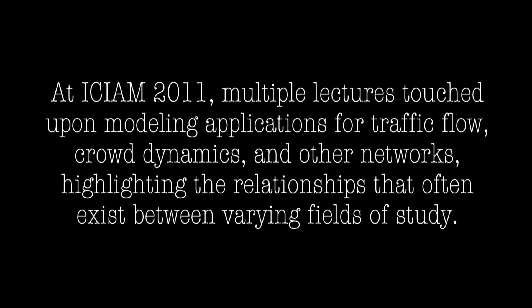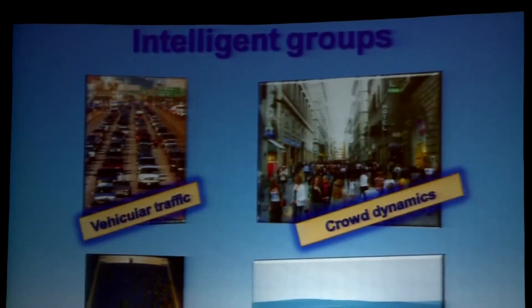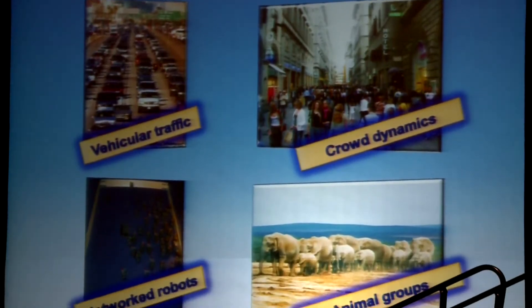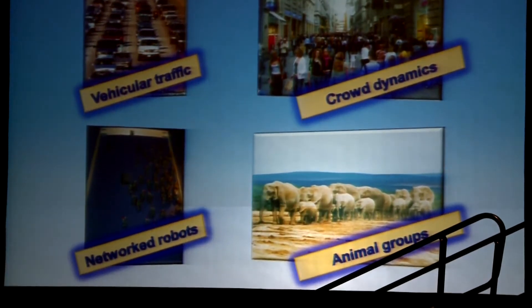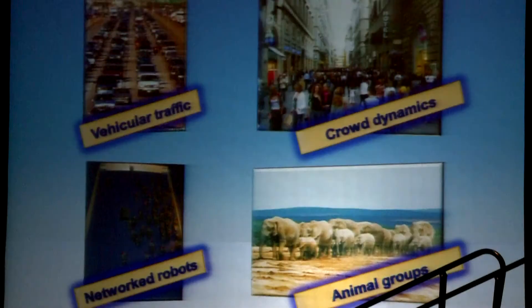I like to think of traffic flow, vehicle traffic, and crowd dynamics as one set of problems that I can call intelligent groups. In these problems we have large groups of agents or entities, but these agents and entities are very different from the typical physical particles of a fluid, because they can take decisions and influence the overall system.